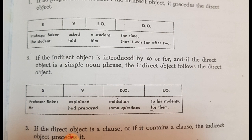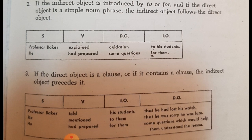If you can use, according to the table, if you can use a preposition, so the indirect object with its preposition comes after the direct. Professor Baker explained oxidation to his students.